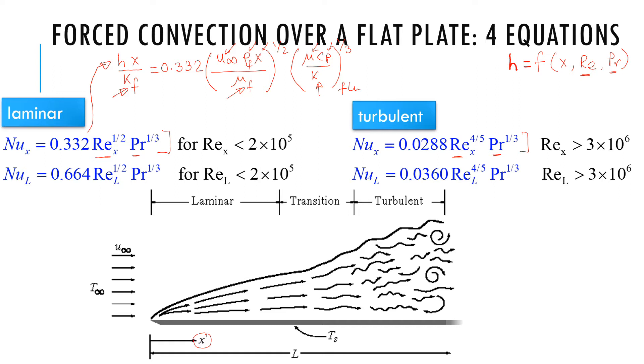The other interesting part in this is if you rewrite this equation, there is an X here and then there is also an X here. So if you put all the X's on this side, H equals some whole bunch of other things times X raised to the power minus half. So in other words, H varies as X raised to minus half for this equation.